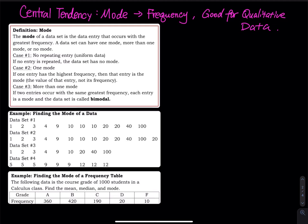Case one is no repeating entry, which is a uniform data set. For example: 1, 2, 6, 10, 11, and 20. This data has no repeating entry — every single entry repeated exactly one time. So this one has no mode.